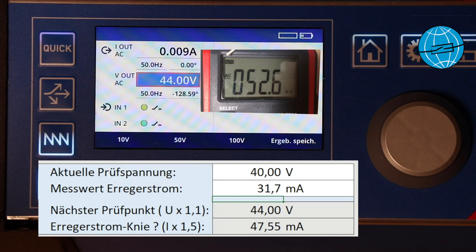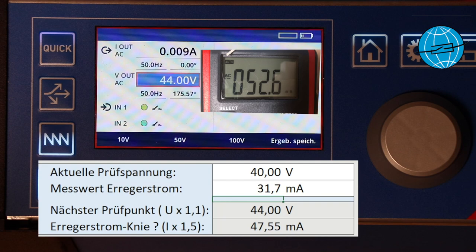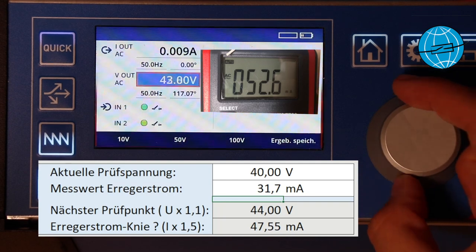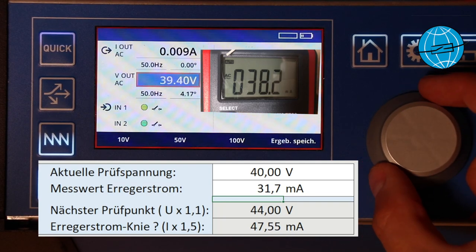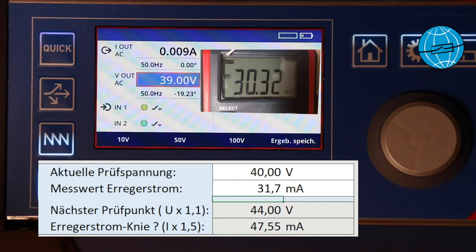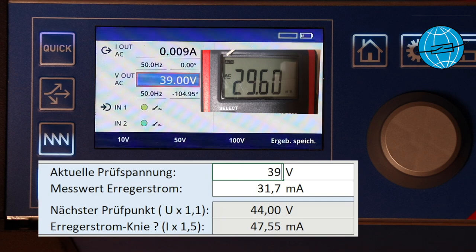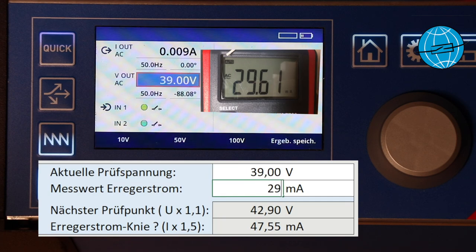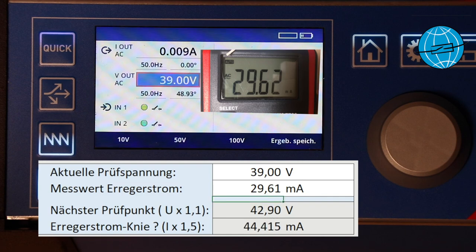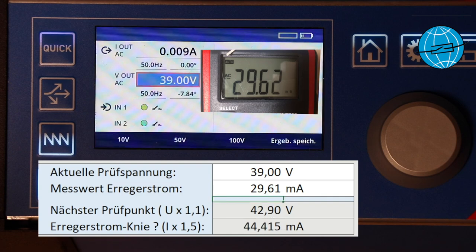Wow, the current jumps up to over 52 milliamps and we were searching for our value about 47.5 milliamps which means we are already too high and we have to go back a little. Since the 40 volts are already above the knee point voltage, let's go back to 39 volts and we will see what happens.